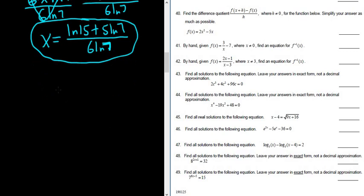Let's do it again. So we have 7 to the 6x minus 5 equals 15. Another way to do it is to take the log base 7 of both sides.